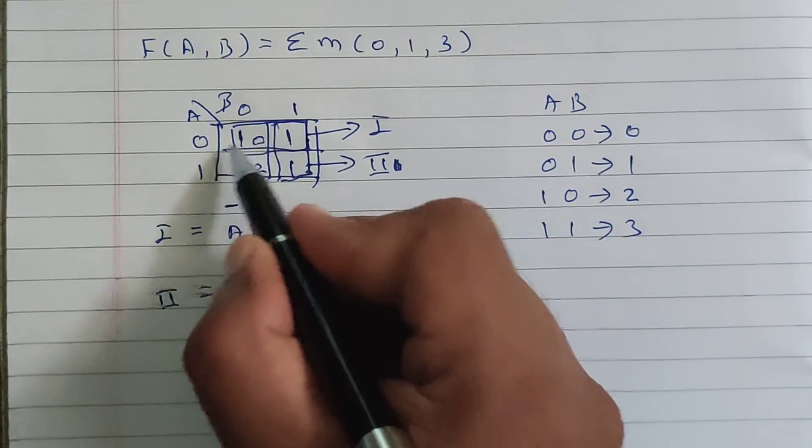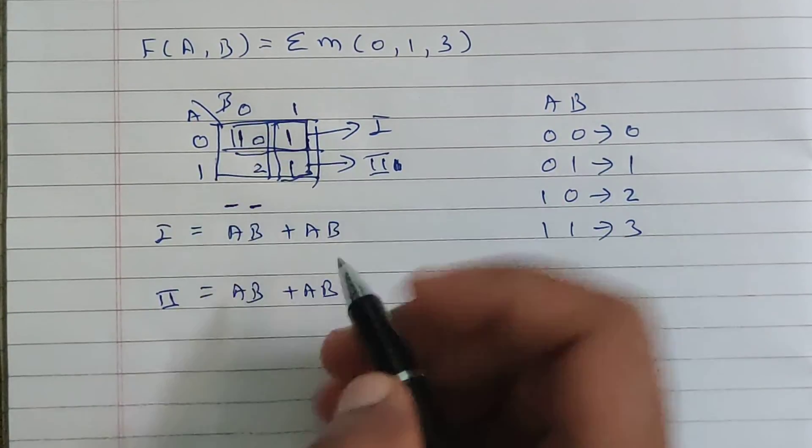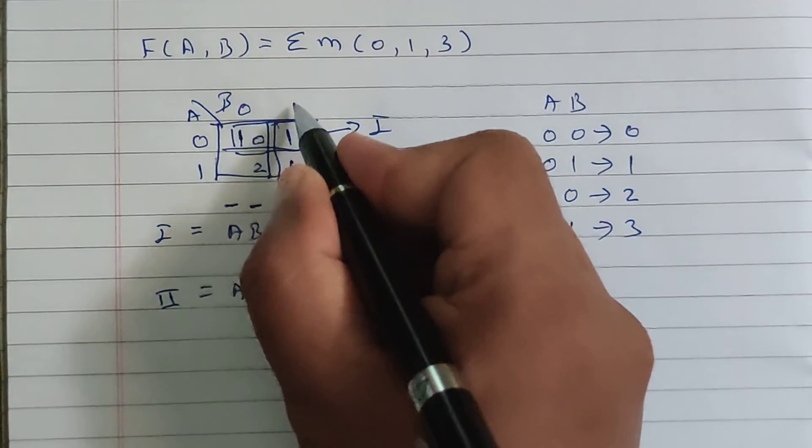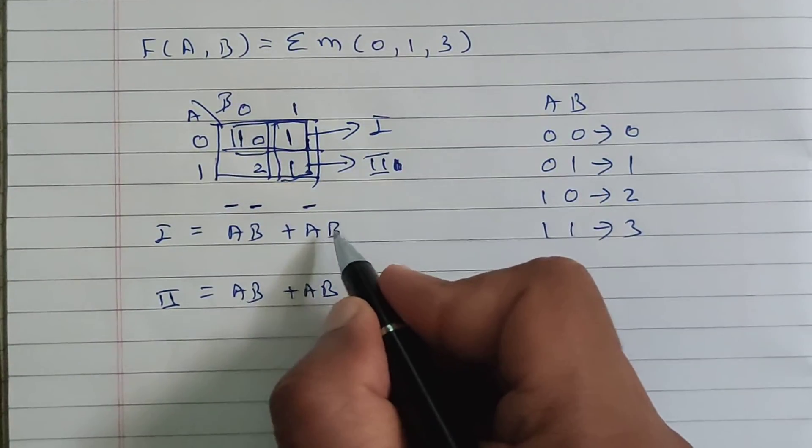For this one, A is equal to 0, B is equal to 1. A is equal to 0, that's why A bar. And B is equal to 1, so B will remain as it is.